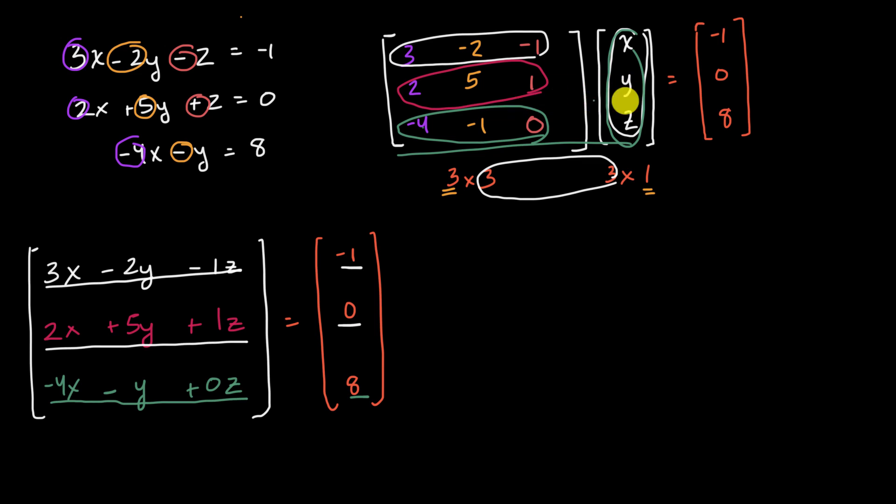Now, another interesting thing just with the representation itself is it makes you think about the problem a little bit differently. You could view this as three planes in three dimensions and what is the X, Y, Z coordinates where they could intersect, or you could view this three by three matrix here as a transformation matrix that's being applied to some unknown three-dimensional vector and under transformation, that unknown three-dimensional vector is equal to this known three-dimensional vector, negative one, zero, and eight.